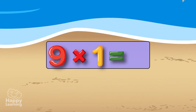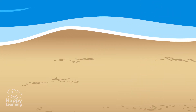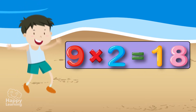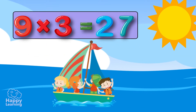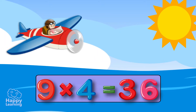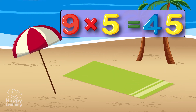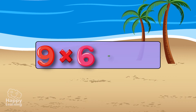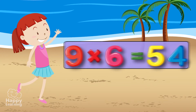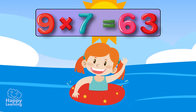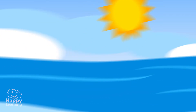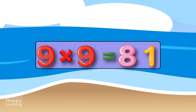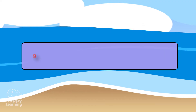Nine times one: nine. Nine times two: eighteen. Nine times three: twenty-seven. Nine times four: thirty-six. Nine times five: forty-five. Nine times six: fifty-four. Nine times seven: sixty-three. Nine times eight: seventy-two. Nine times nine: eighty-one. Nine times ten: ninety.